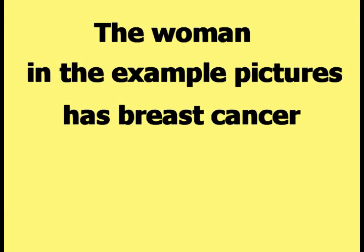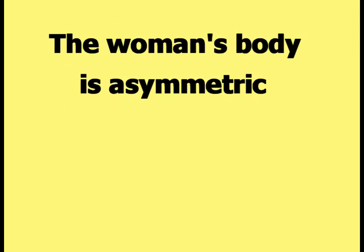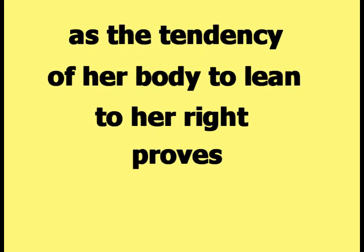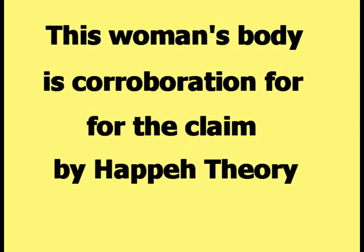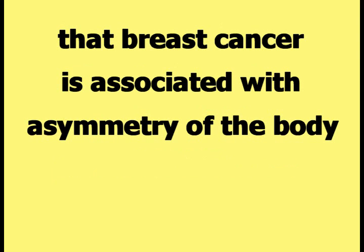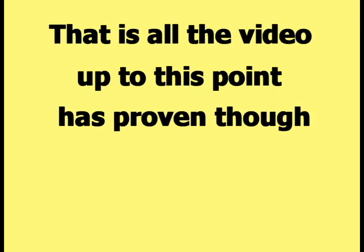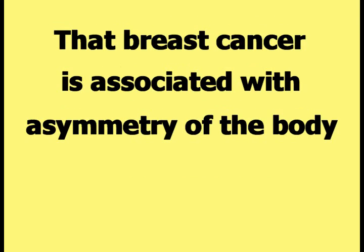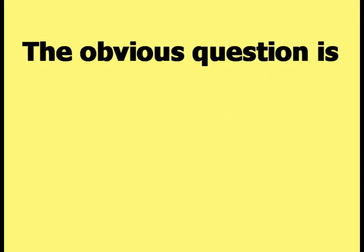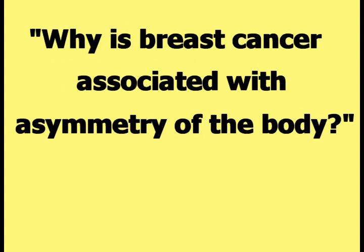The woman in the example pictures has breast cancer, and her body is asymmetric as the tendency to lean to her right proves. This woman's body is corroboration for the claim by Happy Theory that breast cancer is associated with asymmetry of the body. However, all this has proven so far is the association. The obvious question is: why is breast cancer associated with asymmetry of the body?